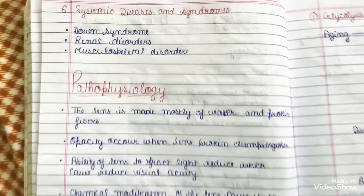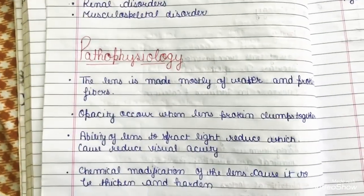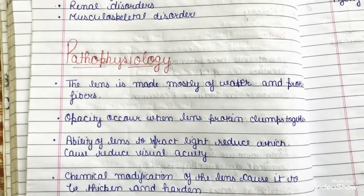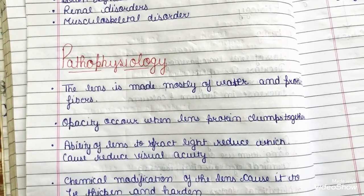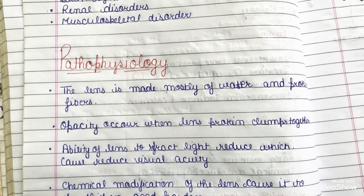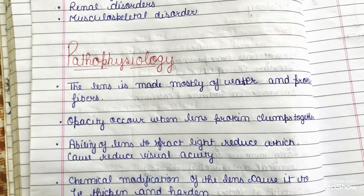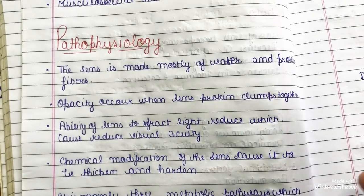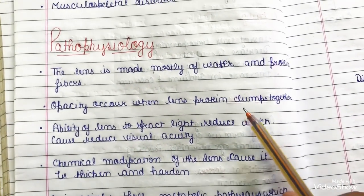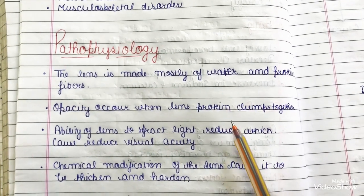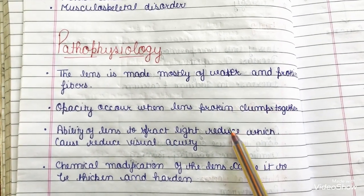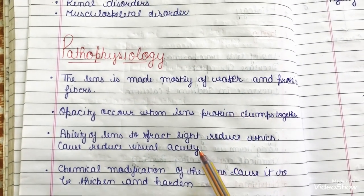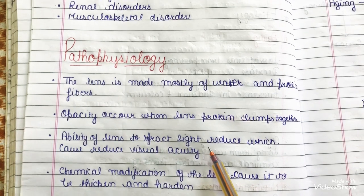Now talking about the pathophysiology of cataract: the lens is made up of mostly water and protein fibers. Opacity occurs when proteins clump together — as mentioned in the last video, where proteins clump there are more chances of attracting further aggregation.